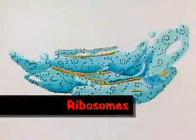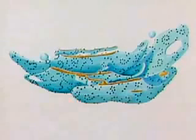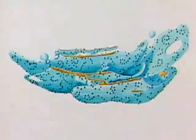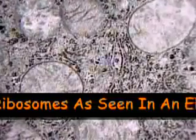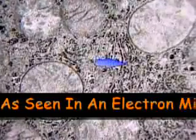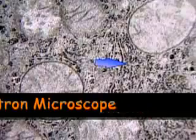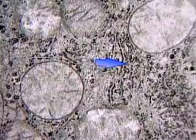Ribosomes are the most numerous structures in the cell and may or may not be attached to the rough endoplasmic reticulum. Ribosomes, which are composed of RNA and proteins, are the primary site of protein synthesis. Since all living things rely on proteins for cell maintenance and growth, it is easy to understand why ribosomes are so abundant.